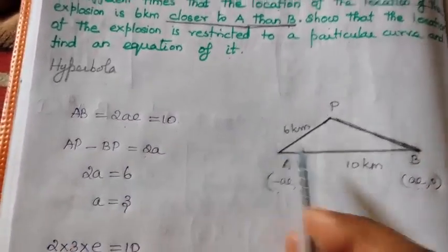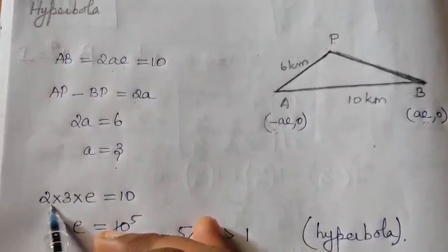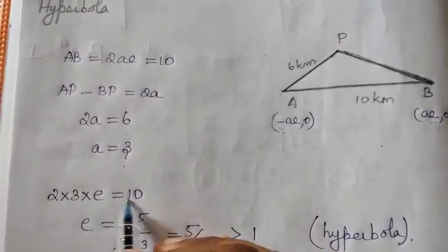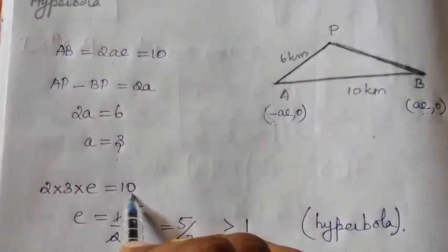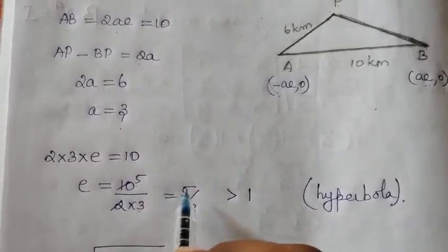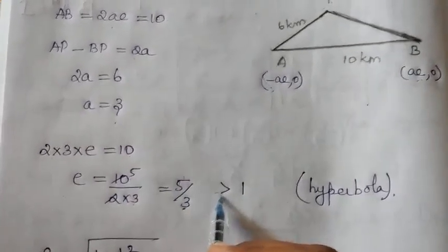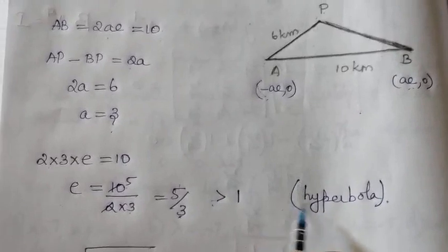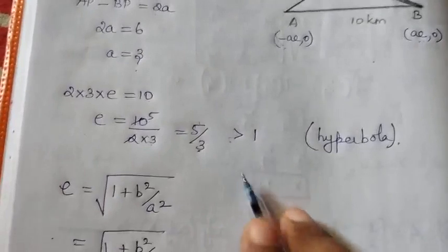So 2a equals 6, which gives a equals 3. Substituting into 2ae equals 10: 2 × 3 × e equals 10, so e equals 10/6, which simplifies to 5/3. Since e is greater than 1, this confirms it is a hyperbola. When e is greater than 1 it is a hyperbola; when e is less than 1 it is an ellipse.